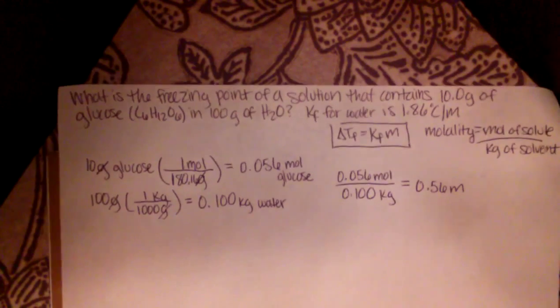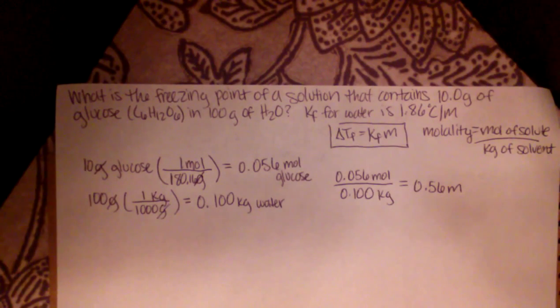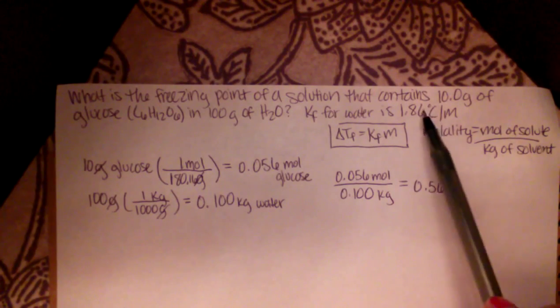So again, now we have our molality value. So basically, to find the change in temperature, we just multiply our molality times the KF.